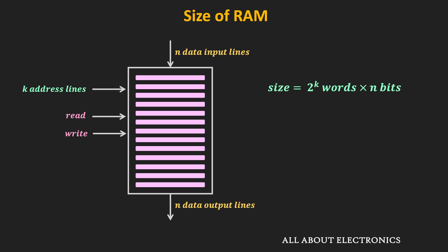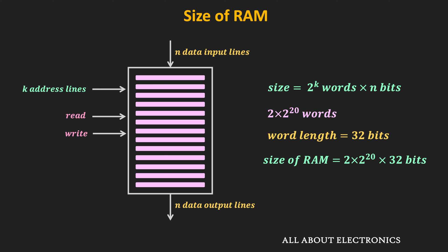So similarly, in another RAM, if the total number of words equals 2 × 2^20 and the word length is 32 bits, then the size equals 2 × 2^20 words × 32 bits. Since 1 byte equals 8 bits, 32 bits corresponds to 4 bytes, and 2^20 corresponds to M. So the total size of the RAM equals 8 megabytes. In this way, we can easily find the size of any RAM.